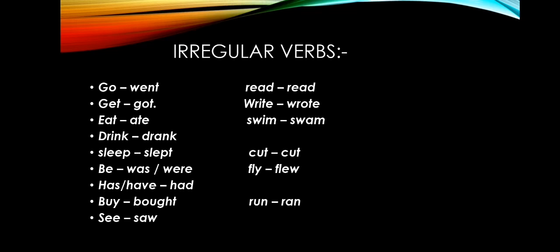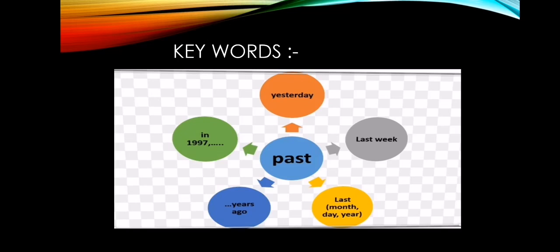There is something else: 'do' and 'does' become 'did' in the past. Now, the keywords of the past simple: yesterday, last week, last month, last day, last year, years ago, as a baby, and specific years like 1997 or 2000.